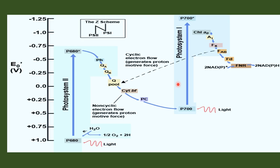The electrons subsequently travel through quinone, then the cytochrome B complex, plastocyanin, and cytochrome B6, where ATP is generated. They then move through cytochrome F and plastocyanin, and the electrons are donated to P700, that is photosystem 1. The oxidized reaction center chlorophyll A of photosystem 1 accepts the electrons, having previously absorbed light quanta.